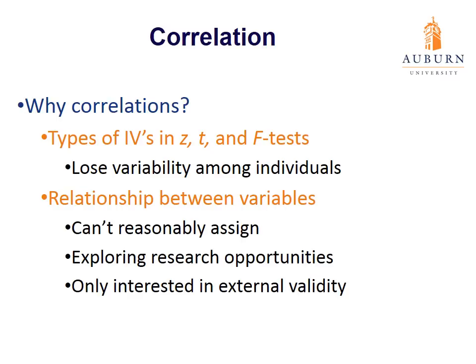There are other reasons why we might do a correlational test beyond keeping data at the individual level. One reason may be that we can't reasonably assign participants to levels of the independent variable. With a T or F test, we'd like to randomly assign participants to conditions, but sometimes we can't — either because it's not possible or not ethical. For example, I can't randomly assign gender in my studies; I have to take participants as they come because I can't change particular characteristics of them.